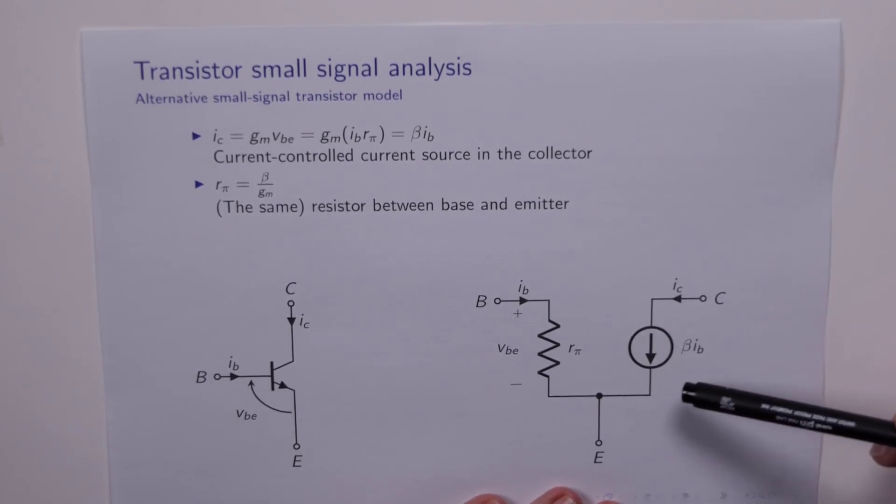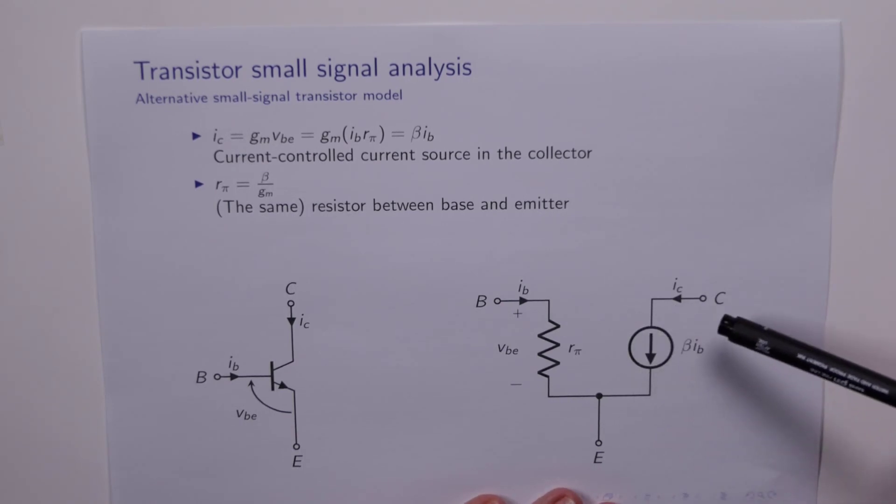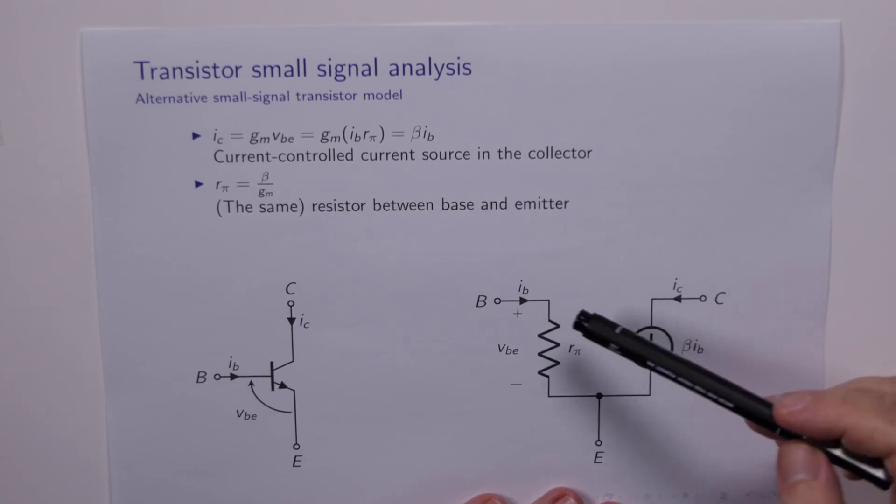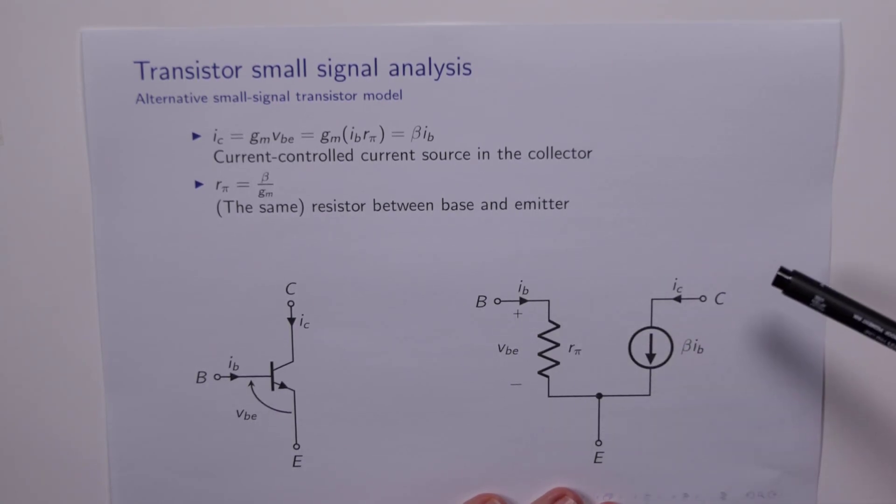They're both current sources. One is nominally controlled by the base emitter voltage, the other is controlled by the base current flowing through R pi. Which one do we use? Well, whichever one you feel like, unless you're being told to use one in particular. Sometimes the equations come out slightly more elegant using one model as opposed to the other, but there's no way to really know in advance which one that is.